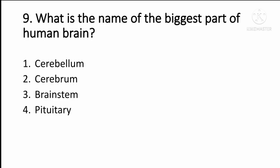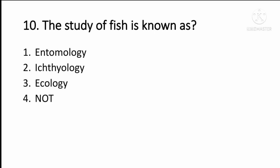What is the name of the biggest part of the human brain? The answer is option 2, cerebrum. The cerebrum is the biggest part of the human brain.